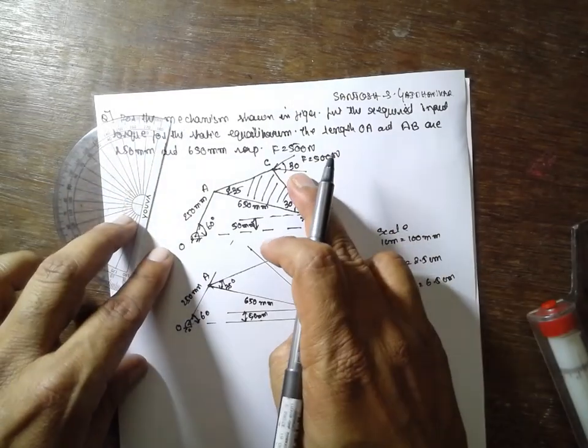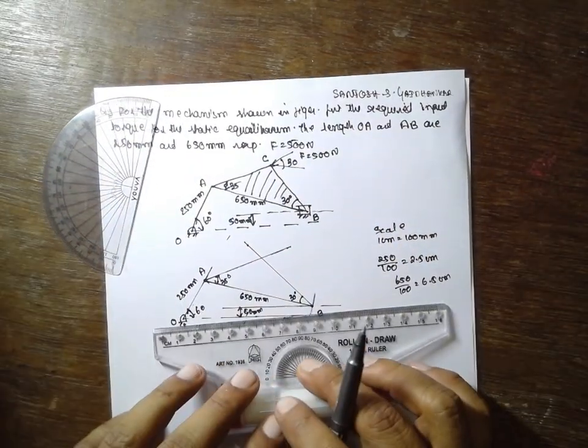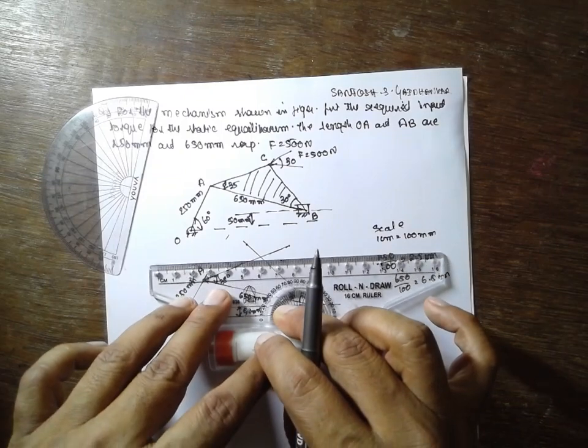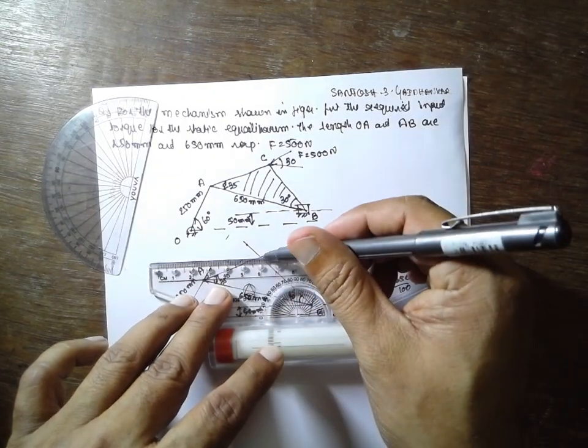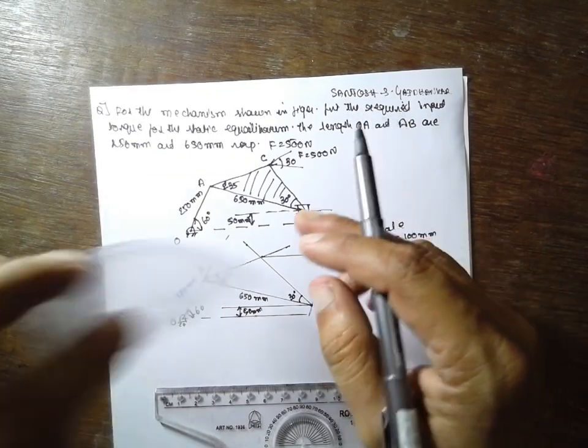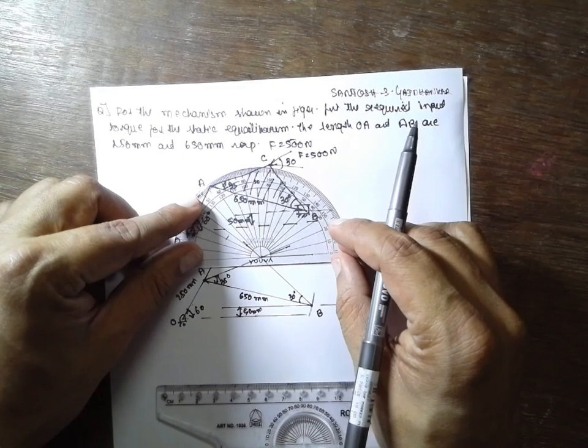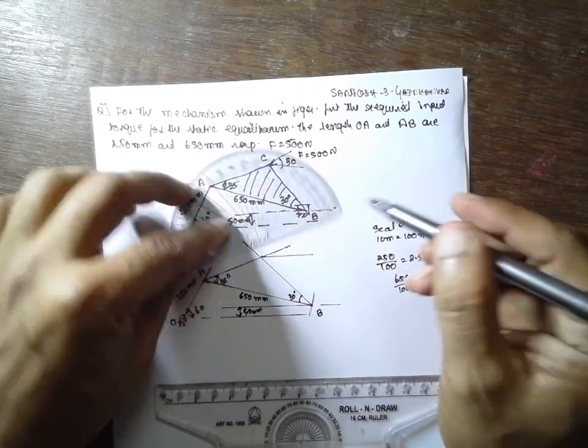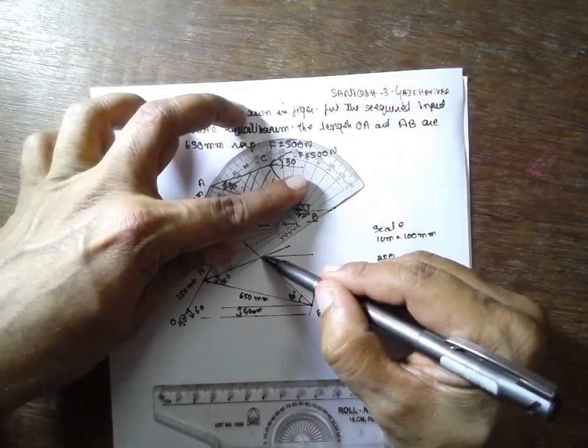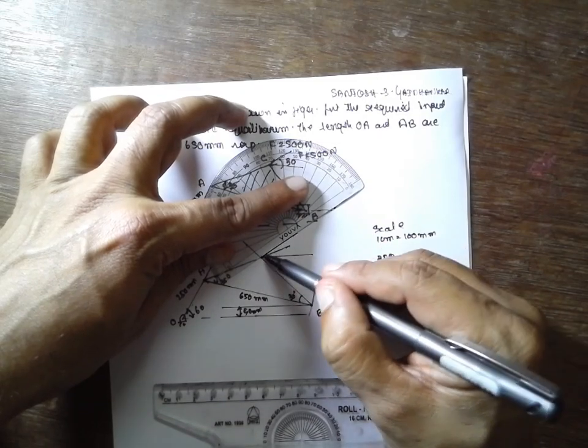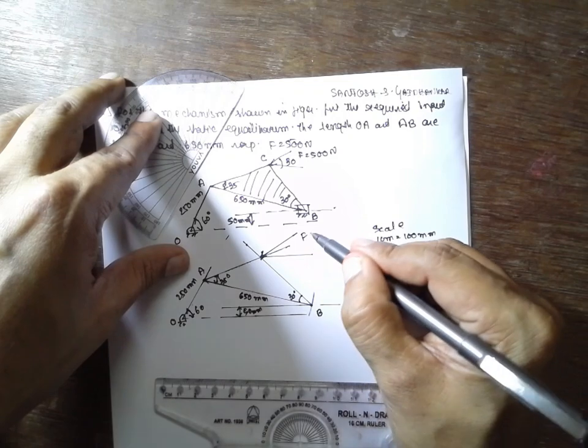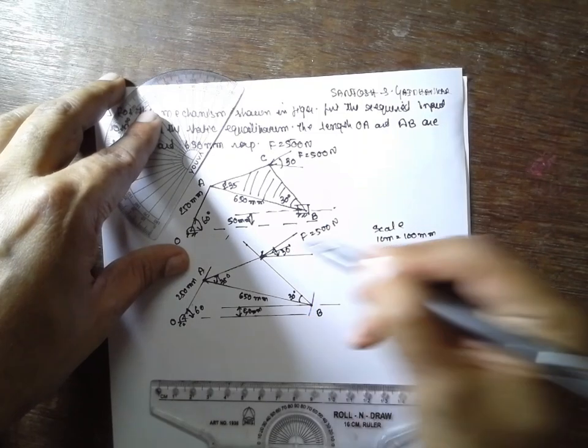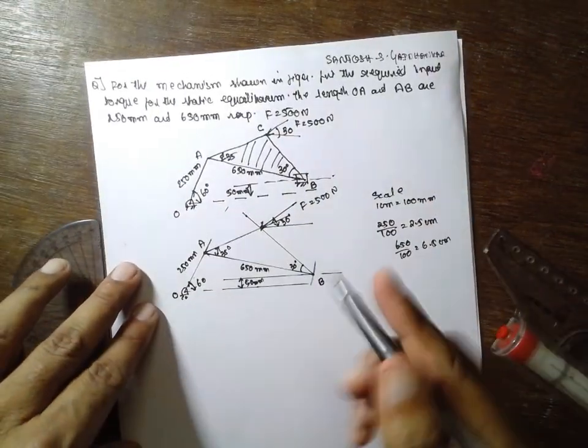The angle is given 30 degrees. Move parallel to this line. The angle should be 30 degrees. This is the force F equals 500 Newton at 30 degrees. This is the main diagram we have completed.